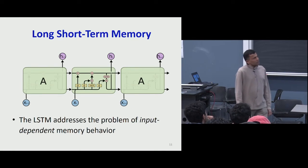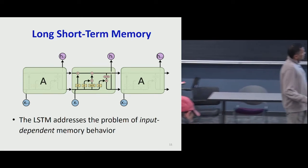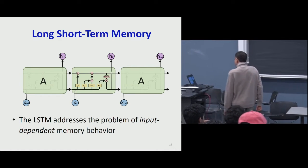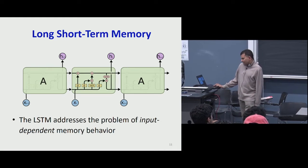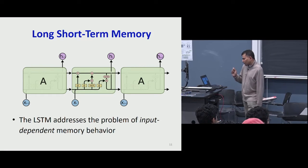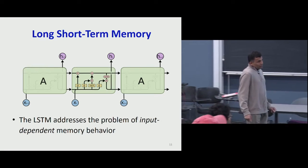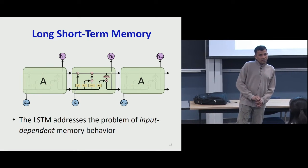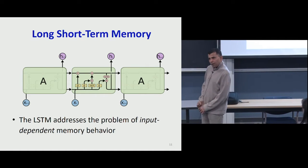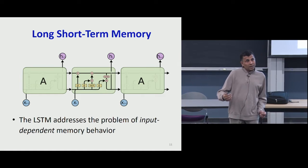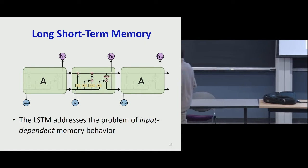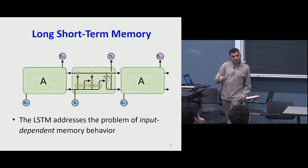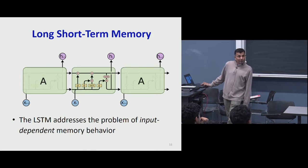So we introduced the Long Short-Term Memory network, which addressed this problem in part by having input-dependent memory behavior. What the LSTM actually does is address the problem of latching the memory going forward — memories are not solely dependent on the ability to retain memory through the parameters of the network, but become more directly dependent on what the current inputs are. The inputs and memories can be incremented or decremented based on inputs, so it can latch onto memories and modify them based on input rather than merely on the parameters of the network.